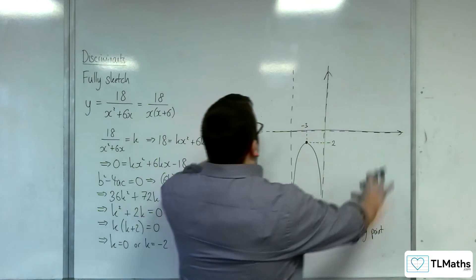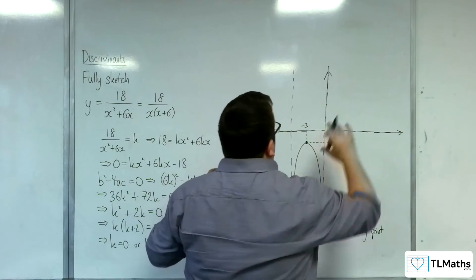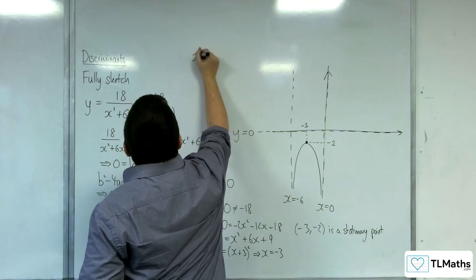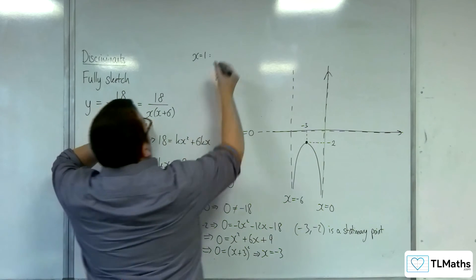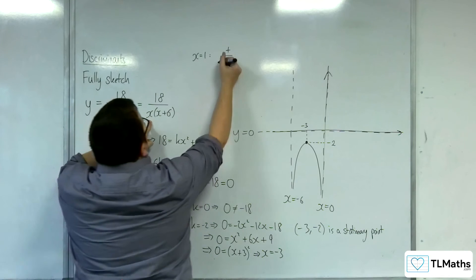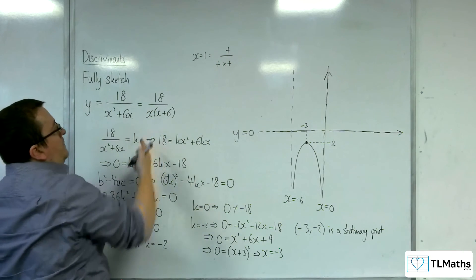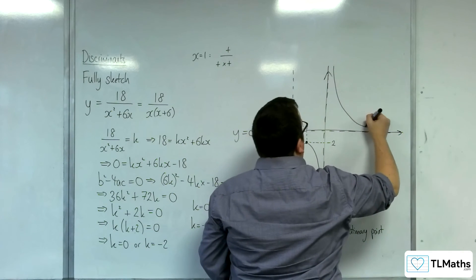Now, as for the two other regions here, I just need to check if we're above the x-axis or below. So if we try x equals 1, substitute it in here. We're going to have positive on the top, 18, over positive times a positive, 1 times 7. And so we're definitely positive and up in this region.